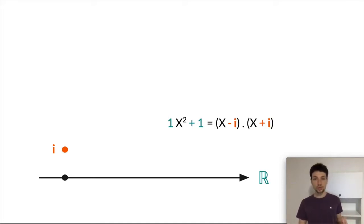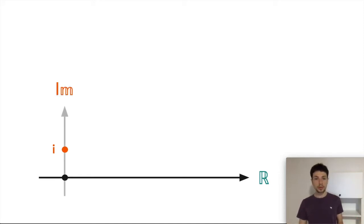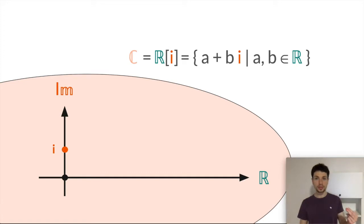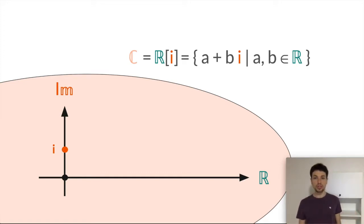So as we know, this gives rise to the field of complex numbers. We have the imaginary axis and the complex plane. A complex number is a point in the plane which can be written as the sum of a real number and a multiple of the imaginary unit i.